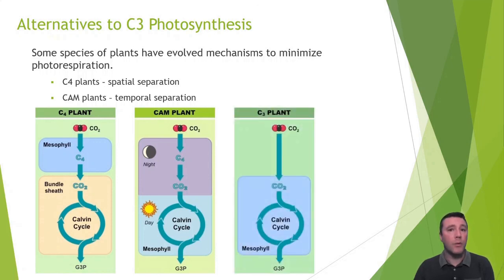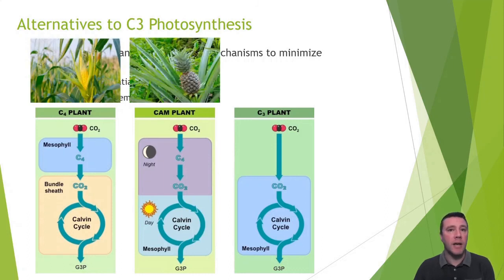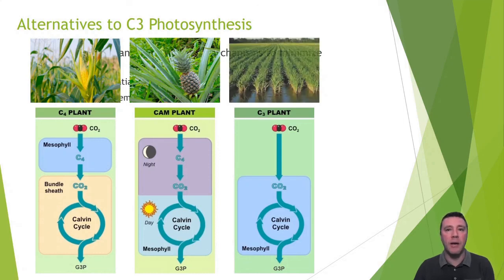C3 plants experience no form of separation in the Calvin cycle. An example of a C4 plant is maize or corn. An example of a CAM plant is pineapple. And rice is a great example of a C3 plant.